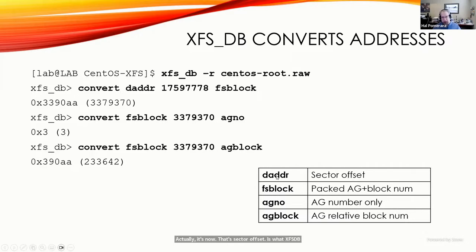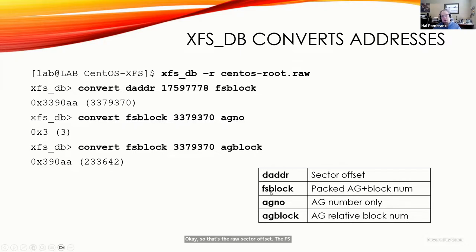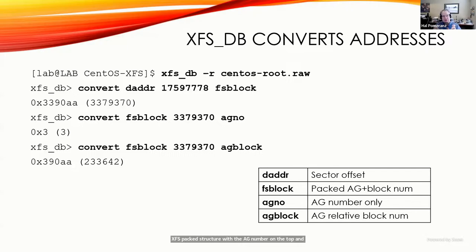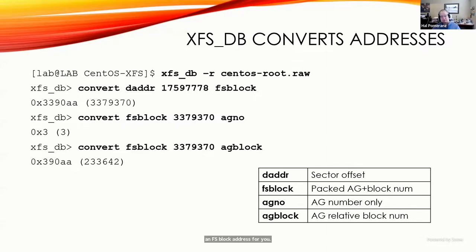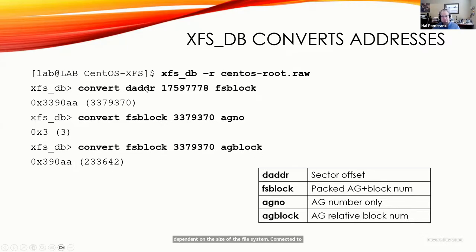I have sector address 17,597,778. In xfs_db, this is referred to as a 'd-addr' (direct address) — the raw sector offset. The fs block address is the normal XFS packed structure with the AG number on top and the relative offset on the bottom. xfs_db can convert that direct address into an fs block address, but remember: the size of the address is completely dependent on the size of the filesystem, so you must be connected to a particular filesystem to do conversions.